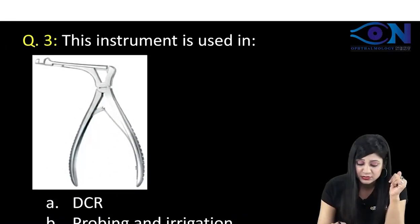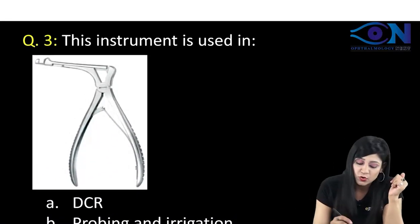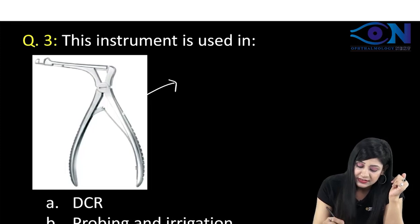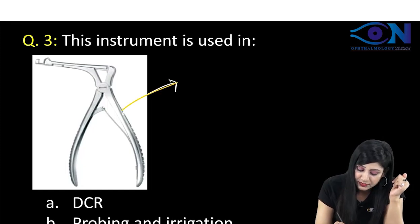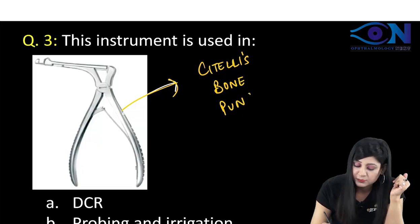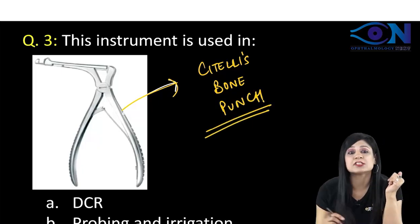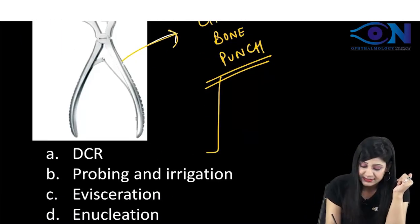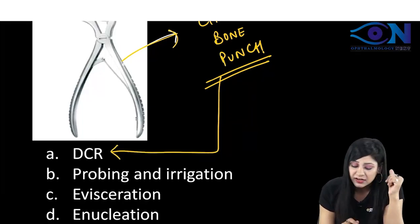Next question, this instrument is used in. Always remember what is this? This is the siteles bone punch. This siteles bone punch is used in cases of DCR.